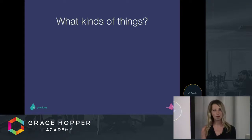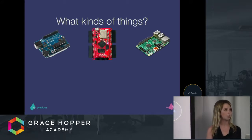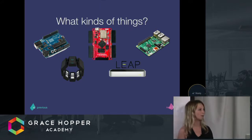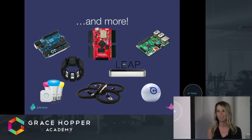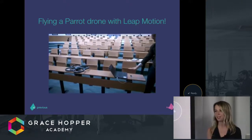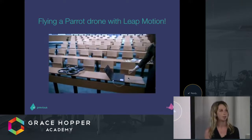So what kinds of things does Cylon.js support? You have your hardware — Arduino, TESOL, Raspberry Pi. You have some really cool gesture control devices like the Leap Motion and the Myo wristband, which I'm wearing now. And then you have other things like drones, light bulbs, robots — the possibilities are endless. Here's a really cool example of a guy using Cylon.js to control a drone with the Leap Motion from his computer.